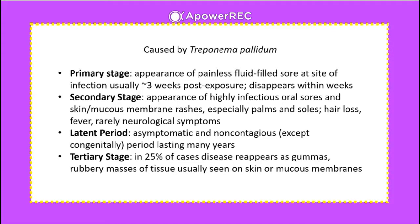Syphilis is caused by Treponema pallidum and has several stages. The primary stage features painless fluid-filled sores at the site of infection about three weeks post-exposure, which disappear within weeks. The secondary stage includes highly infectious oral sores and skin/mucous membrane rashes especially on the palms and soles, hair loss, fever, and rarely neurological symptoms. The latent period is asymptomatic and non-contagious (except congenitally) and may last many years. In the tertiary stage, 25% of cases see the disease reappear as gummas — rubbery masses of tissue on skin and mucous membranes.